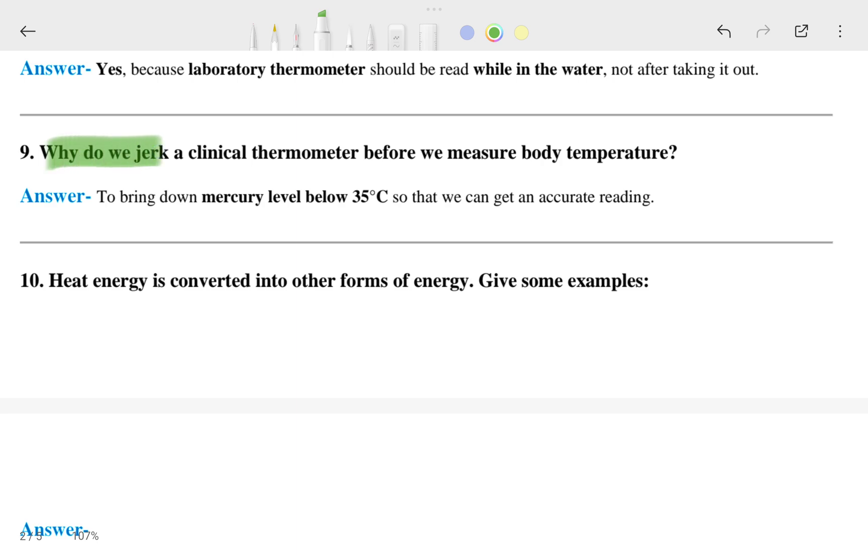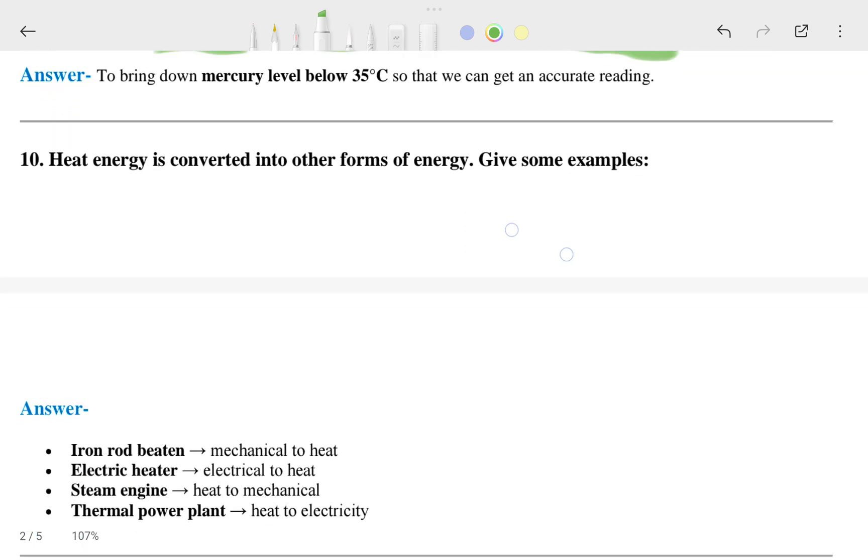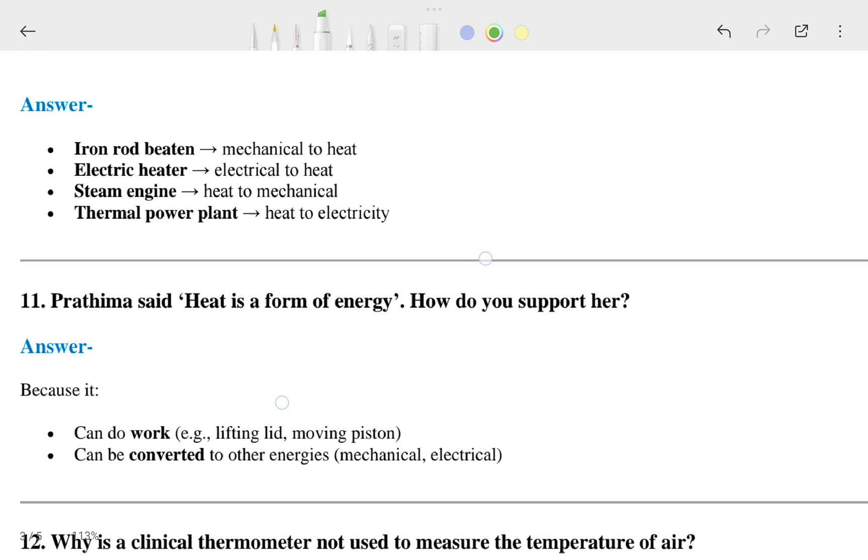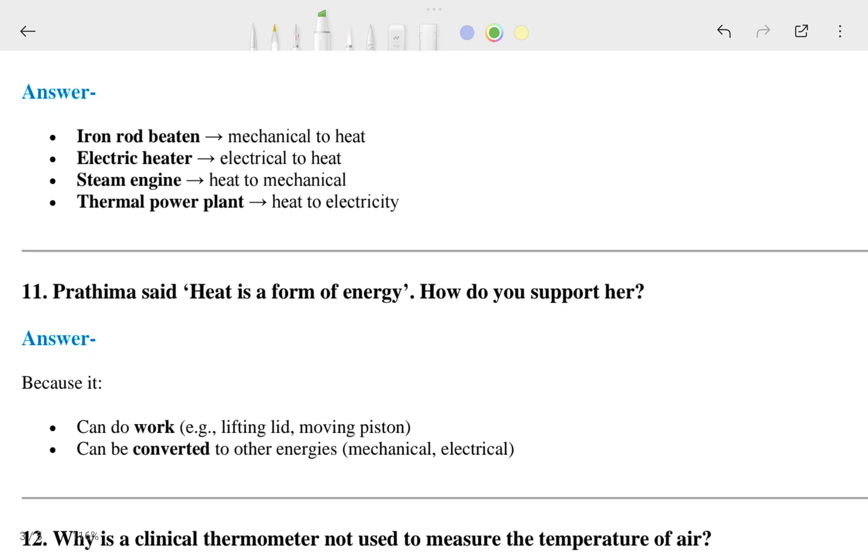If it is clear, then we will go to the ninth one: Why do we jerk a clinical thermometer before we measure body temperature? That's the answer. This is our tenth one: Heat energy is converted into other forms of energy. Give some examples, like iron rod and battery. The answer is given here. The eleventh one: Pratima said that heat is a form of energy. How do you support her?